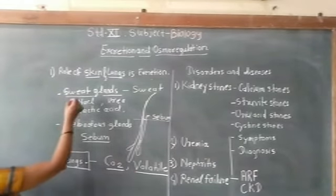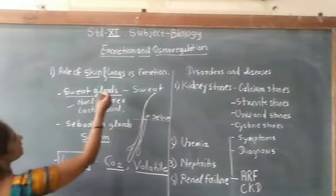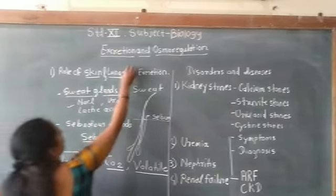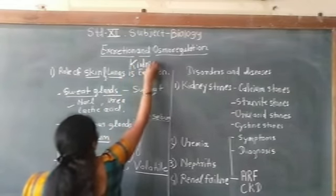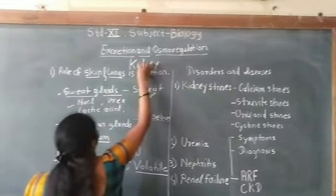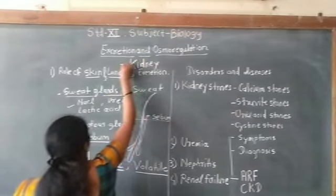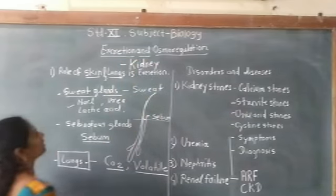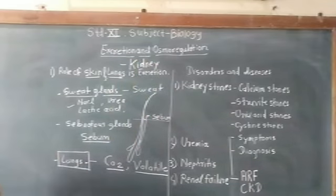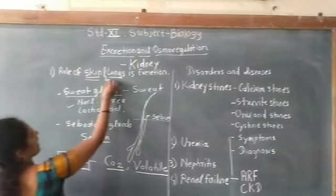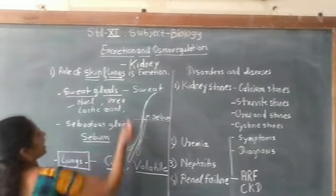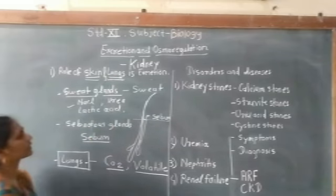Though the kidney is the main or principal excretory organ in humans, in addition to the kidney, the skin and lungs also act as excretory organs.